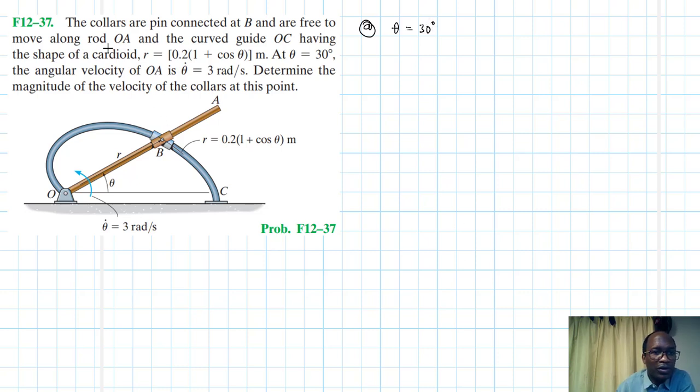We're going to use polar coordinates. Let me indicate the radial axis as well as the transverse axis. These are the two axes, perpendicular to each other.